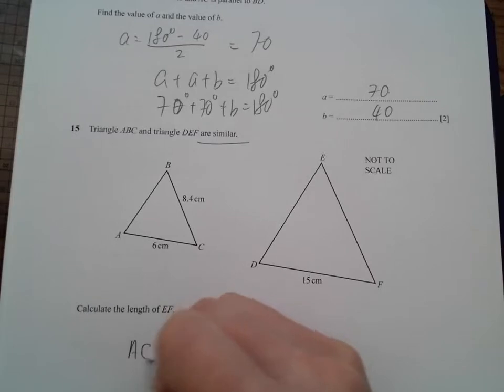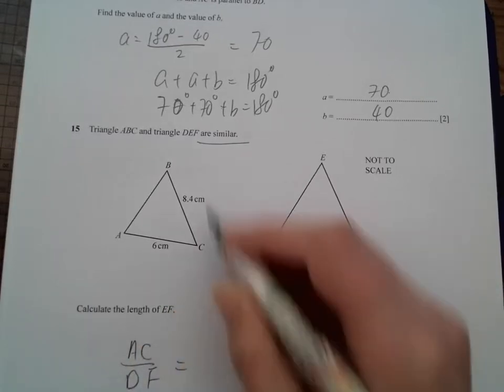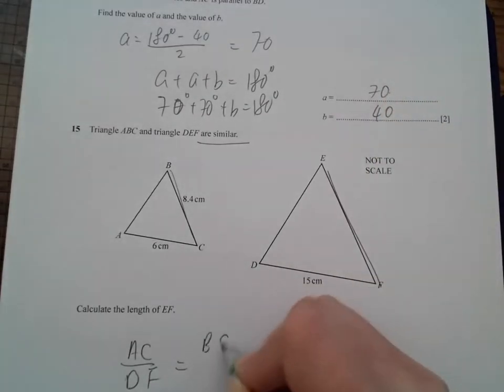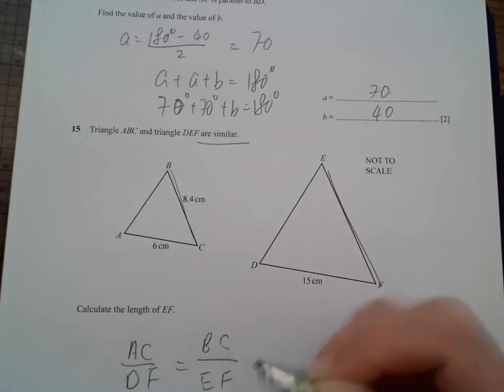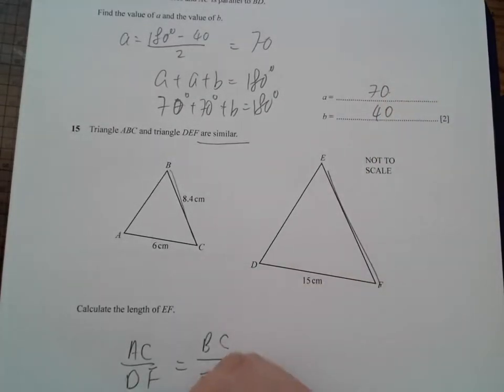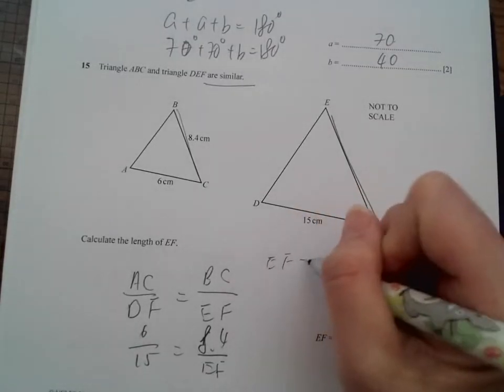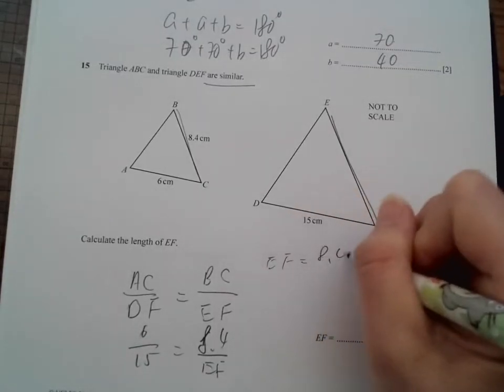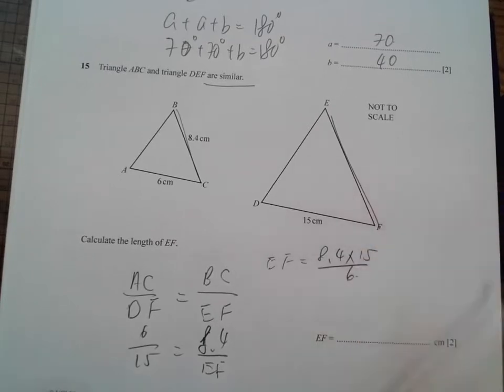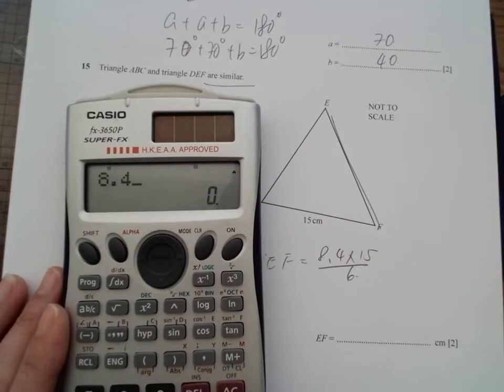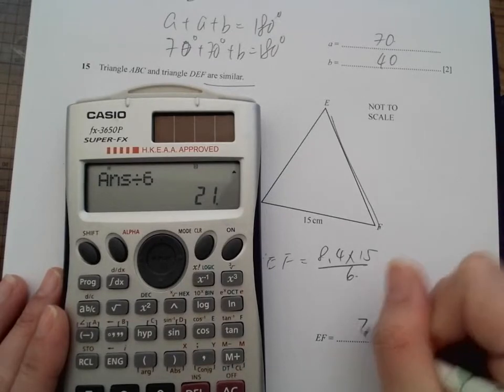All right, now we have a similar triangle here. So we have AC over BF should be equals to BC over EF. We do not know EF, but we've got the rest of them. So EF should be equals to 8.4 times 15 divided by 6, and 21 is the answer.